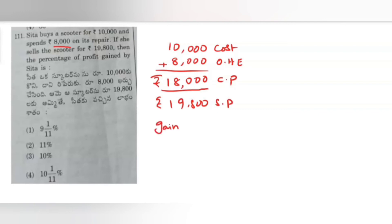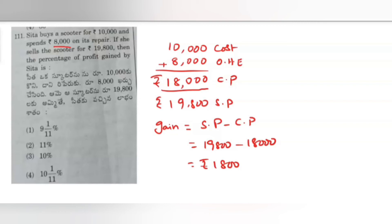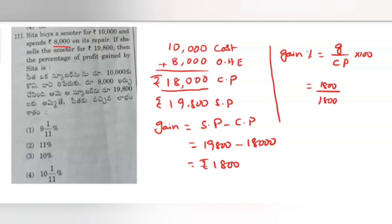Gain equals SP minus CP, which is 19,800 minus 18,000 equals 1,800 rupees. Gain percent equals gain by CP into 100: 1,800 by 18,000 multiplied by 100. After cancellation — two zeros cancel, then 18 cancels — the answer is simply 10 percent profit. Option 3 is correct.